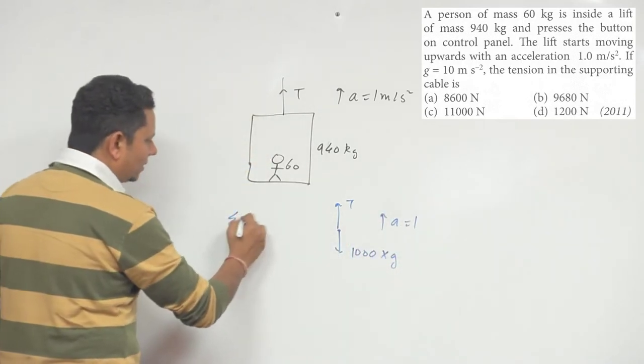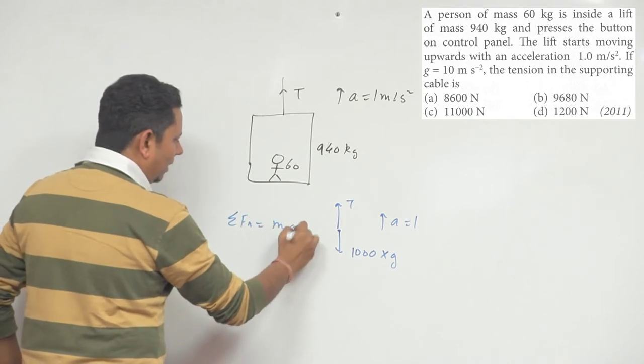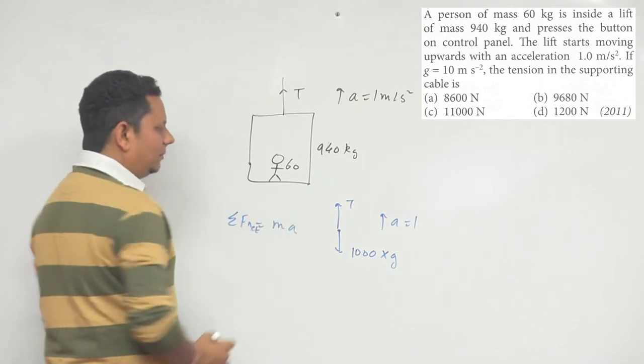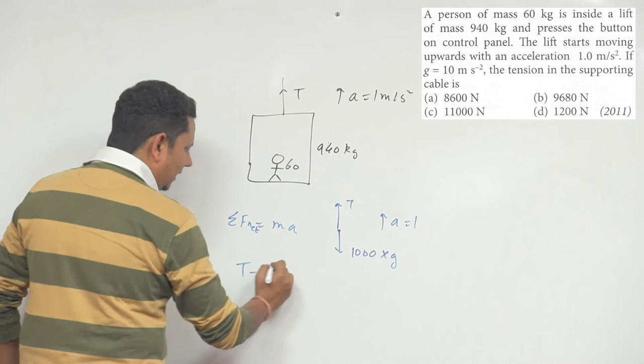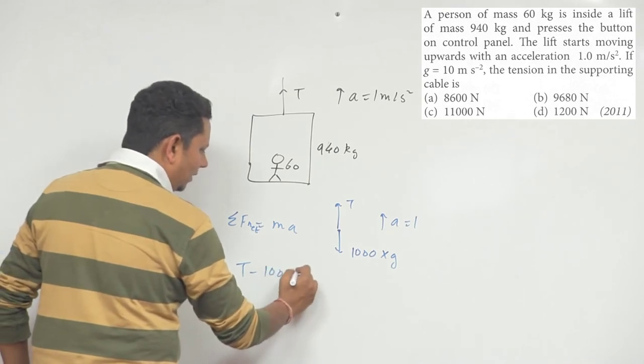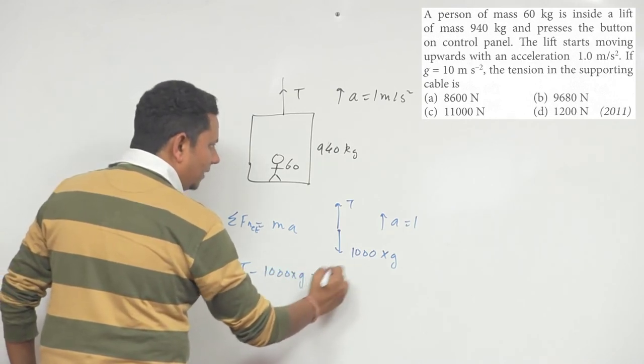if we use Newton's second law, F net equals M A, then we can say that tension minus 1000 G equals 1000 A.